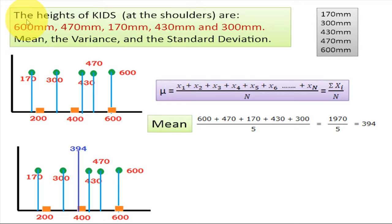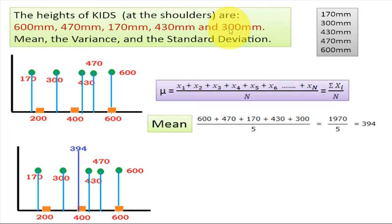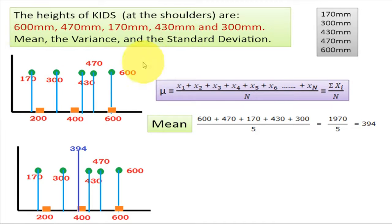Now we will take one example to calculate mean of the data, how to calculate variance, and how to calculate standard deviation of the data. Let us consider some kids — kids always have some height. The heights of kids are 600 mm, 470 mm, 170 mm, 430 mm, and 300 mm. We have to calculate mean, variance, and standard deviation for this data.